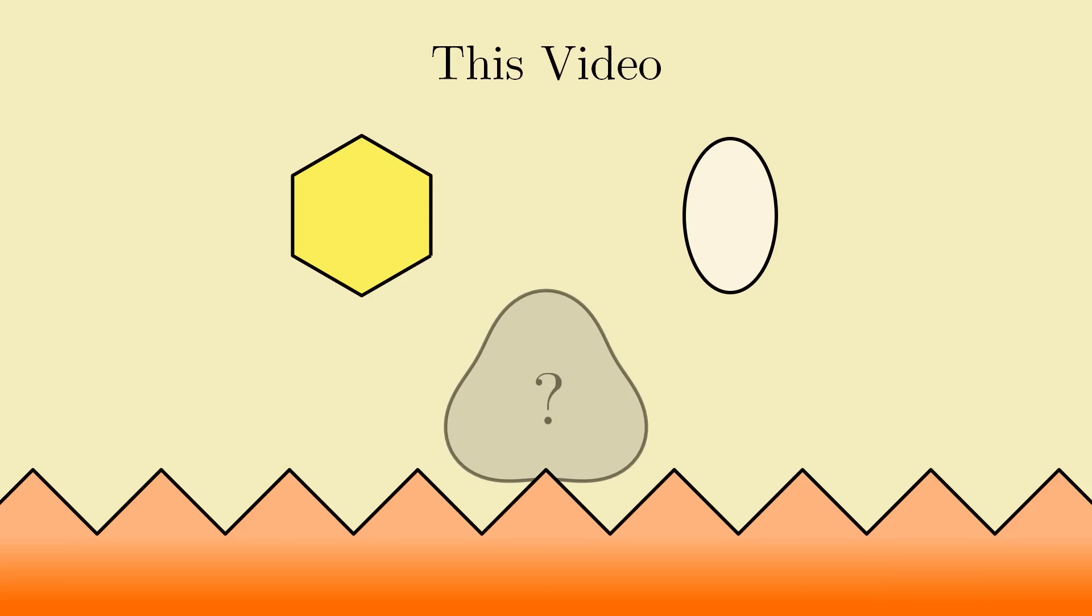In this video, we'll look at finding the ideal roads for some other wheel shapes, such as other polygons and ellipses. Then we'll see if we can take what we learned from the last video to solve the inverse problem, starting with a road and finding the ideal wheel to roll on it.